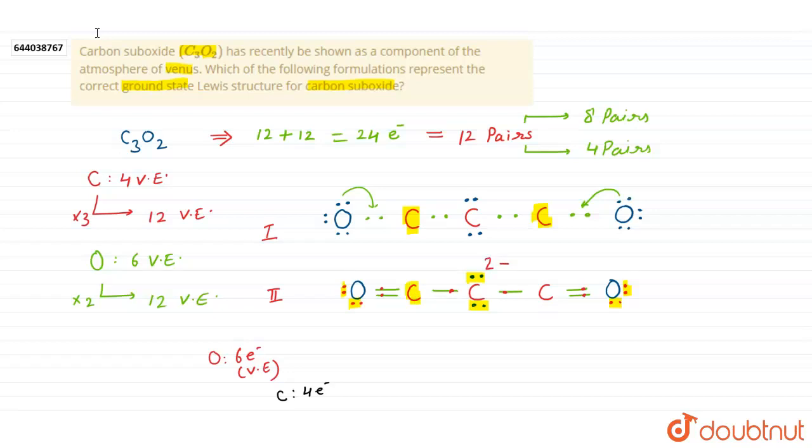That's why here we can assign minus two charge. In this carbon, there is no lone pair but half of shared pair of electrons—one, two, three—it has one electron less than that of its valence shell. So we can assign plus one charge here and plus one charge here.